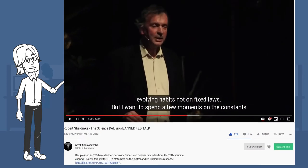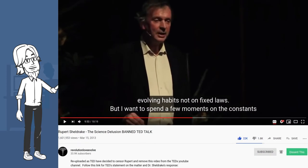I think Rupert Sheldrake sums up the science republic Pollyanna best though with his science delusion TED talk. Rupert Sheldrake, from 9:48. Anyway, that's my own hypothesis in a nutshell of morphic resonance. Everything depends on evolving habits, not on fixed laws. But I want to spend a few moments on the constants of nature too, because these are, again, assumed to be constant. Things like the gravitational constant or the speed of light are called the fundamental constants. Are they really constant?